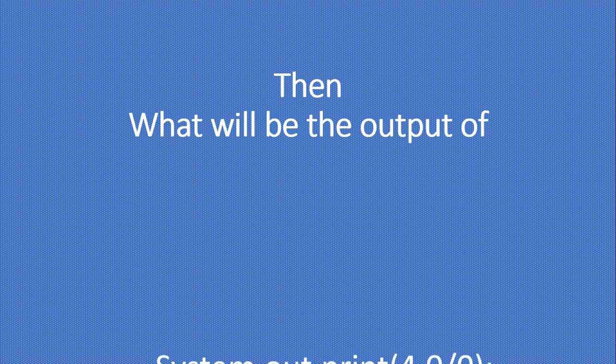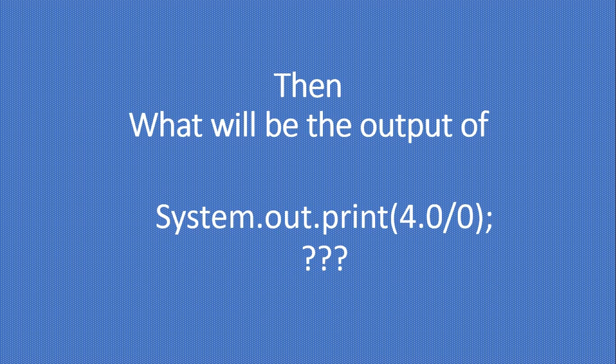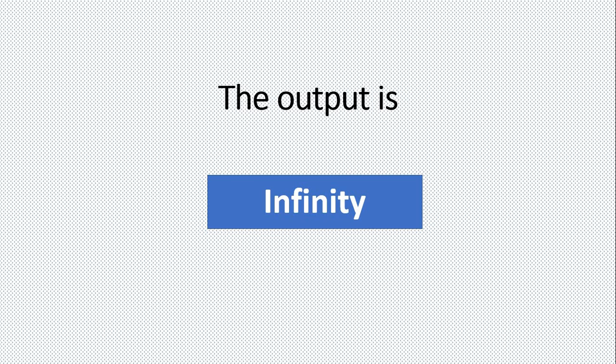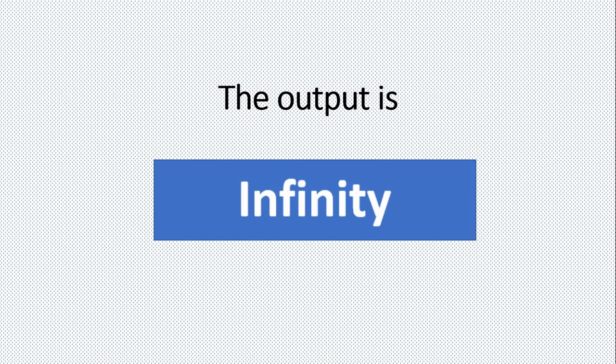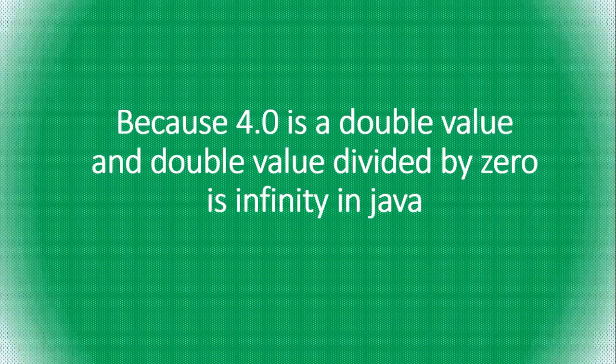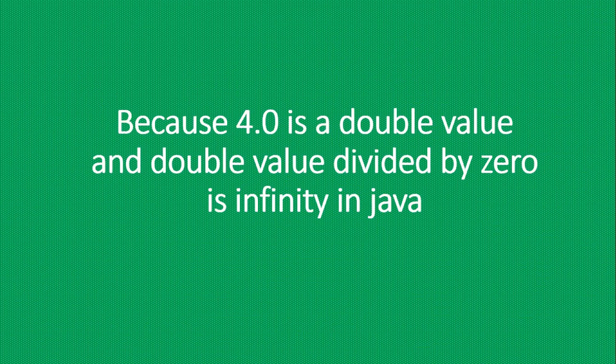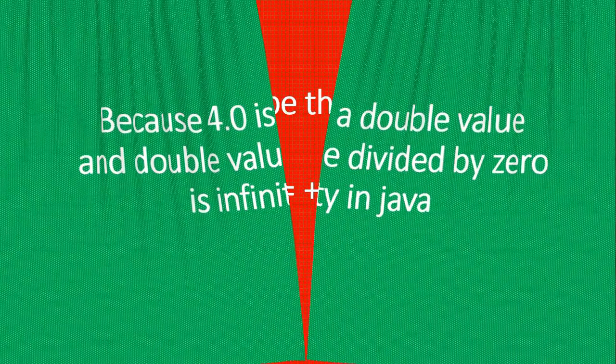But wait — what will be the output of System.out.print(4.0/0)? Are you a little bit confused? Don't worry — the output will be Infinity. Why? Because 4.0 is a double value, and a double value divided by zero is Infinity in Java. You won't get any ArithmeticException if you divide a double value by zero.